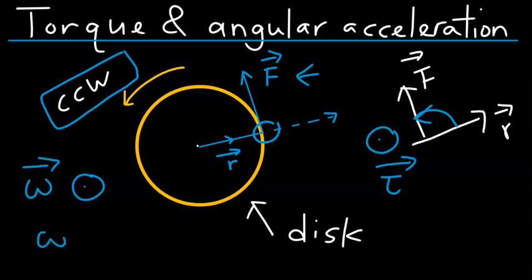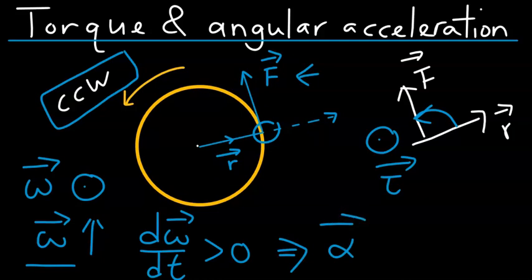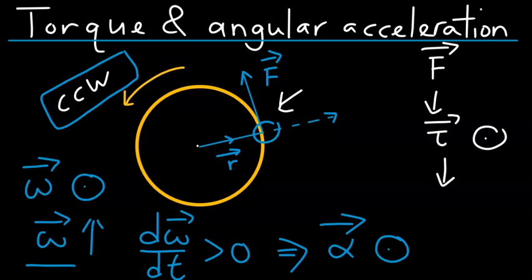The application of this force at the rim of the disk will cause the disk to spin faster and faster, meaning omega will increase with respect to time. Since the time rate of change of angular velocity is positive — that is, angular velocity is increasing with respect to time — that implies angular acceleration also in the same direction as angular velocity, namely coming out of the plane. So we have a torque coming out of the board causing angular velocity to increase, which in turn causes an angular acceleration also coming out of the plane.